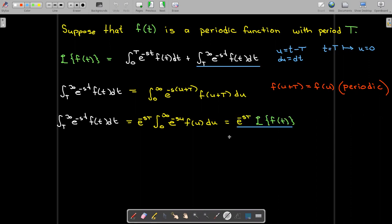So what does that say? If I write this out, on the left hand side I have the Laplace transform. On the right hand side, I have e^(-sT) times the Laplace transform.